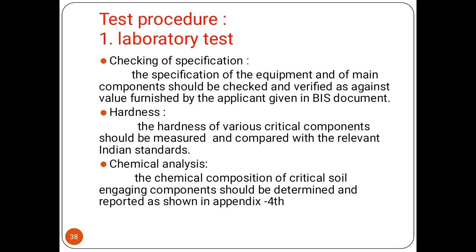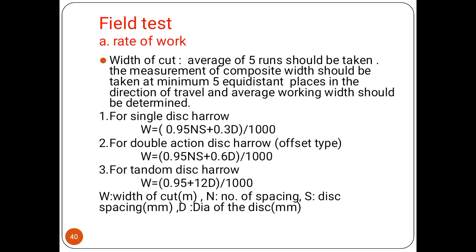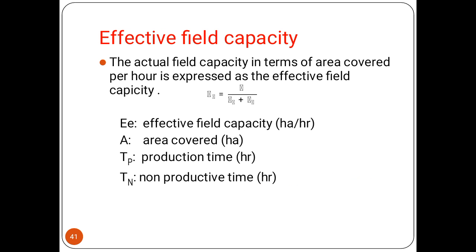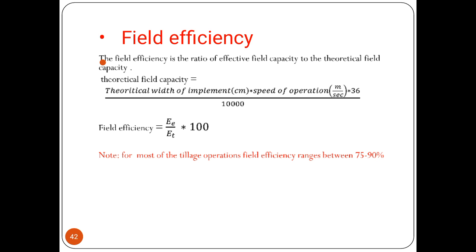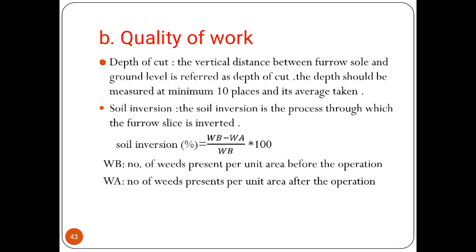For the field pattern, we check: location of the test plot, size of test plot, last crop grown, topography of the field, type of soil, bulk density of the soil, and cone index of the soil. In laboratory tests we check specification, chemical analysis, and wear test. For rate of work in case of disk harrow, the width of cut is found using given formulas for single disk plow, double action disk plow, single action disk arrow, double action disk harrow, and tandem disk harrow. The effective field capacity is the actual area covered per hour, calculated using the theoretical field capacity formula. The quality of work depends upon depth of cut and soil inversion.